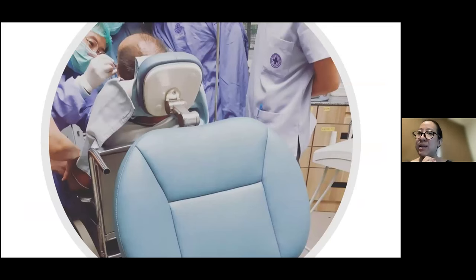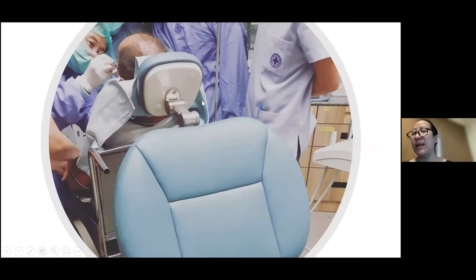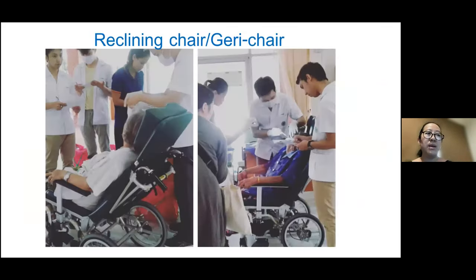If the visit is just for oral examination with no drilling, scaling, or other treatment, and there's enough space behind the dental chair, you can flip the headrest to the other side and move the patient's wheelchair close, using the headrest as head support for the examination. If the patient comes in a reclining or jury chair, you don't even have to transfer them — just do the treatment in the reclining chair with head support.